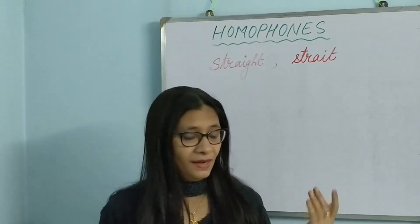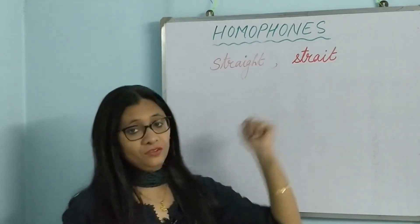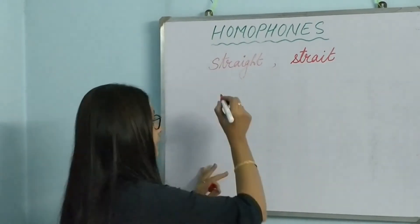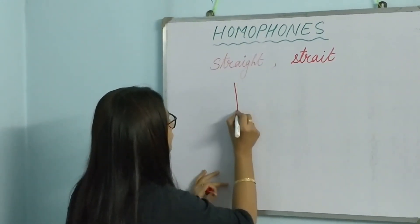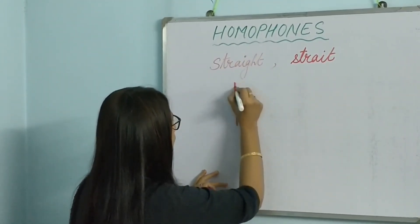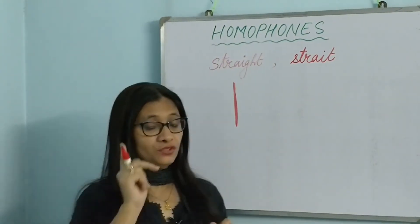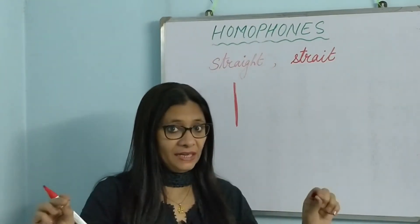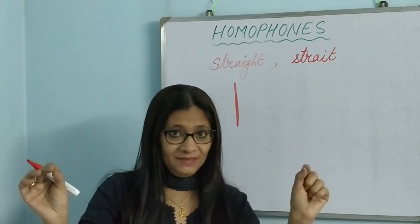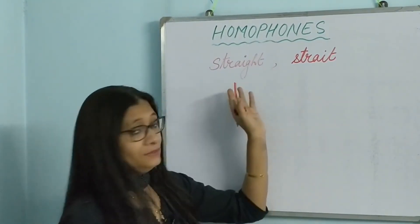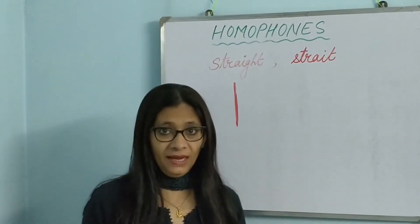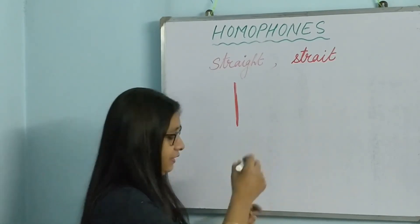The next set: 'straight' — S-T-R-A-I-G-H-T — means standing straight, making a straight line, not curved. 'Stand straight and tall,' 'make a straight line.' Now 'strait' — S-T-R-A-I-T — is totally different.